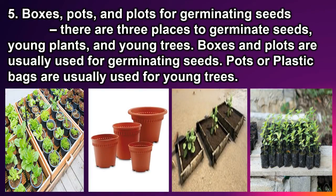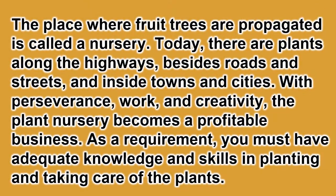Five: boxes, pots, and plots for germinating seeds. There are three places to germinate seeds, young plants, and young trees. Boxes and plots are usually used for germinating seeds; pots or plastic bags are usually used for young trees. The place where fruit trees are propagated is called a nursery.